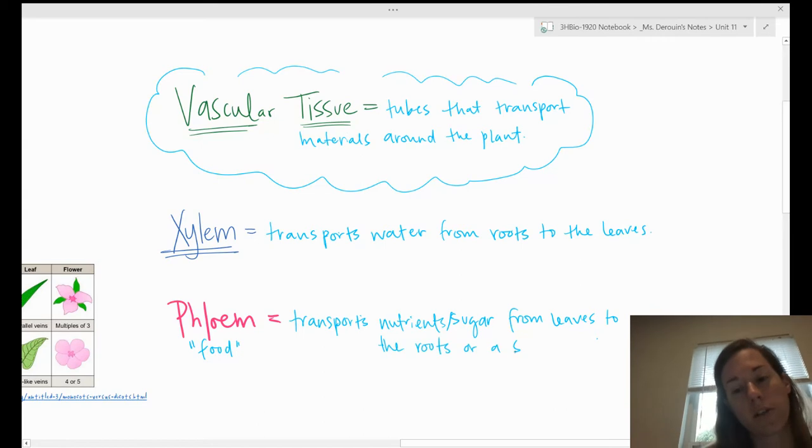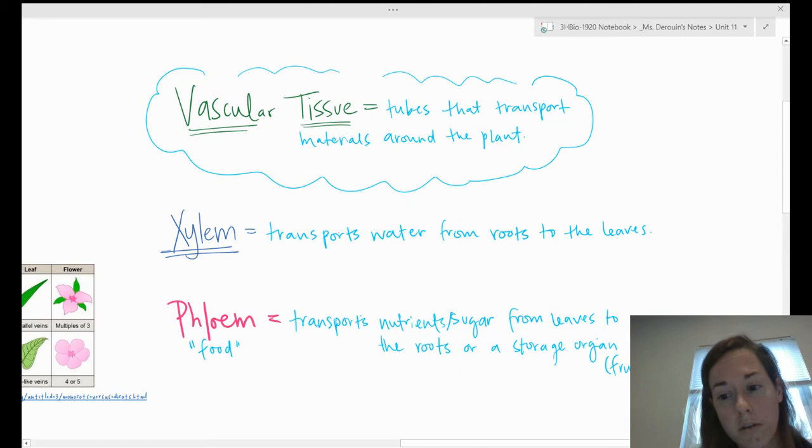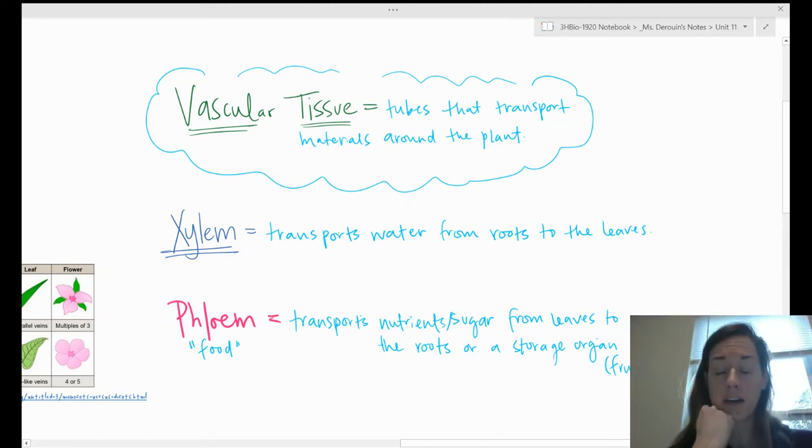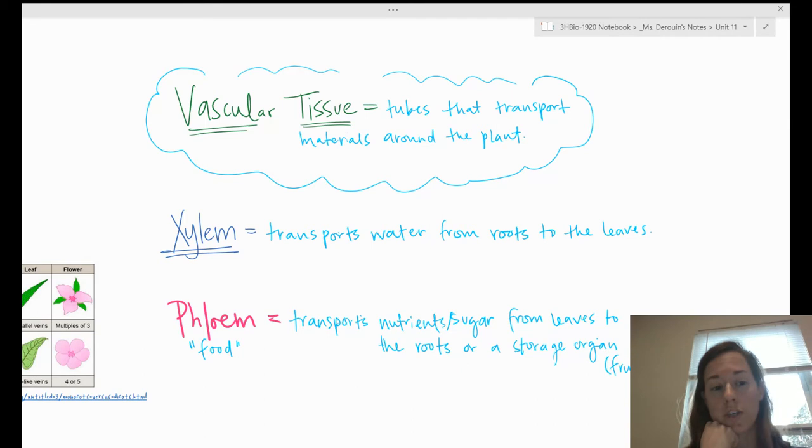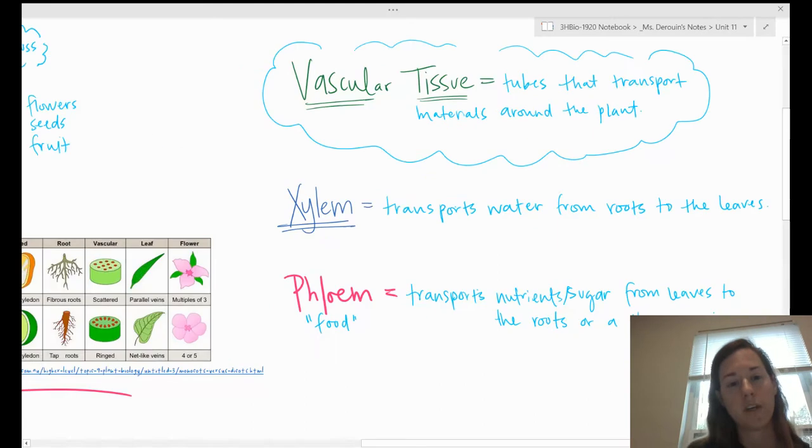That's the reason why most of the time fruit is sweet, because it's the storage for the sugar that the plant had produced. Carrots, potatoes are sugar sinks for the plant to put the sugar that it made through photosynthesis. We'll talk more about fruit in a minute when we get to that section, but that's xylem and phloem, and those are the two types of vascular tissue that plants use to survive.